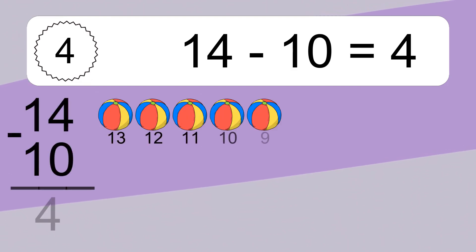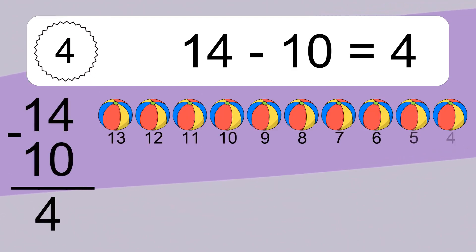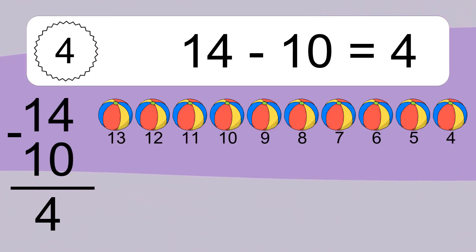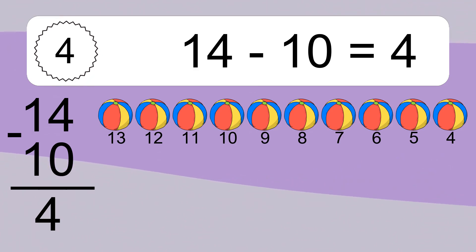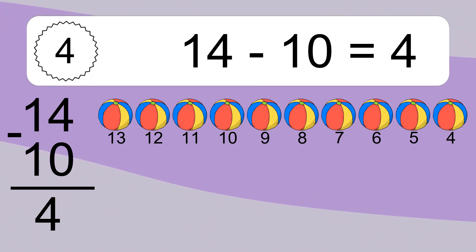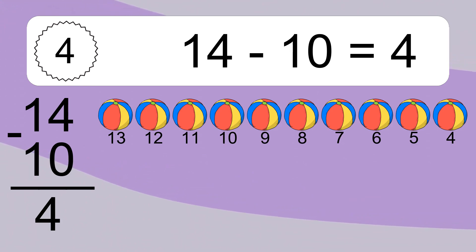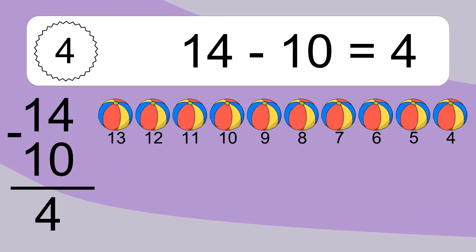14 minus 10 equals 4. Let's count it: 13, 12, 11, 10, 9, 8, 7, 6, 5, 4.